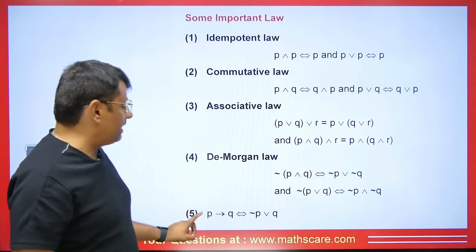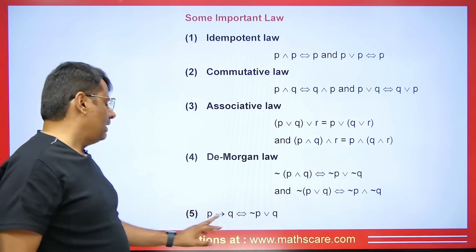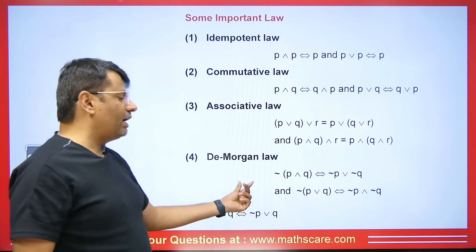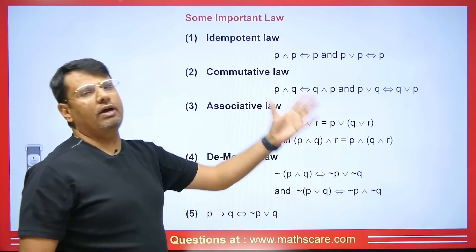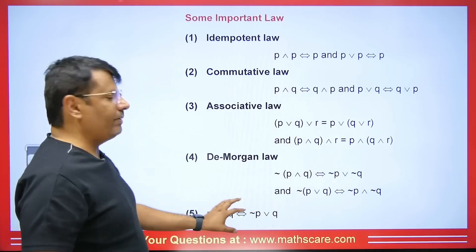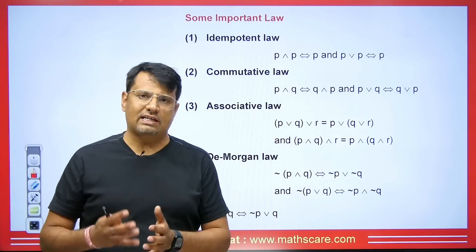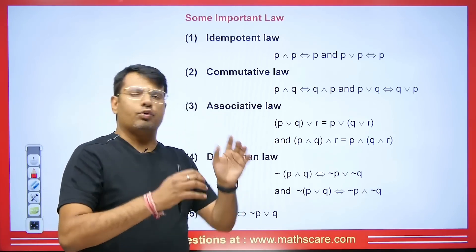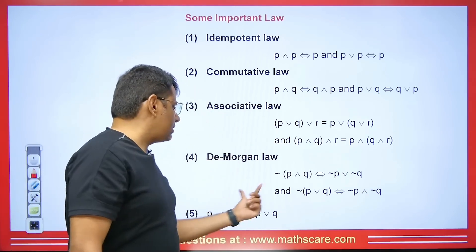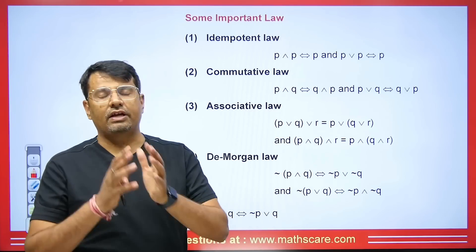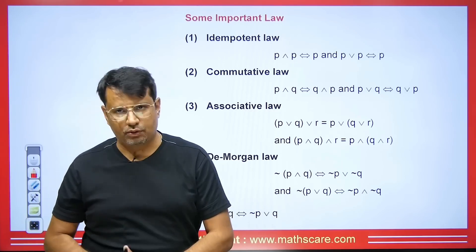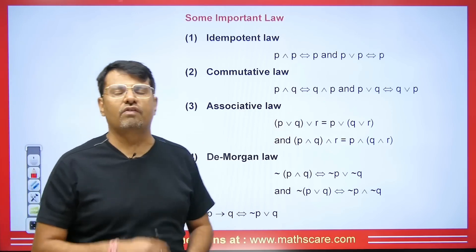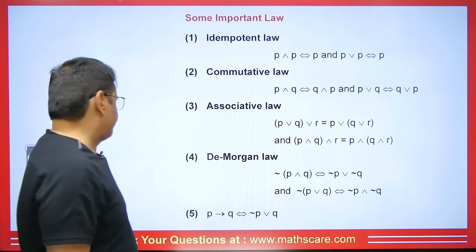Students, we have a very useful law: if we have p implies q, then its value is equal to negation of p OR q. If you take p and q statements and check them, they are always equivalent. You can easily prove it. We will use this a lot in the proofs of the questions that are coming.